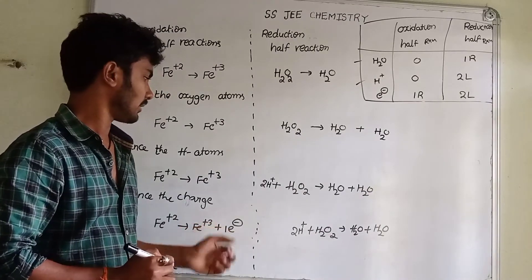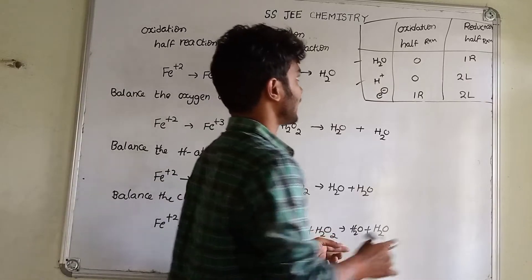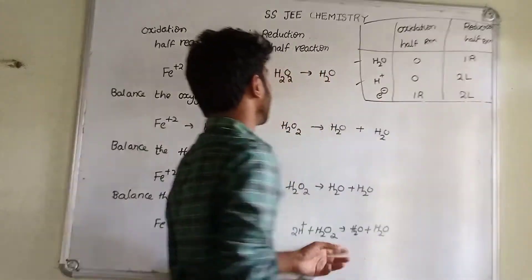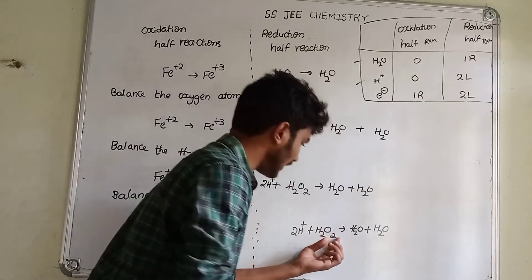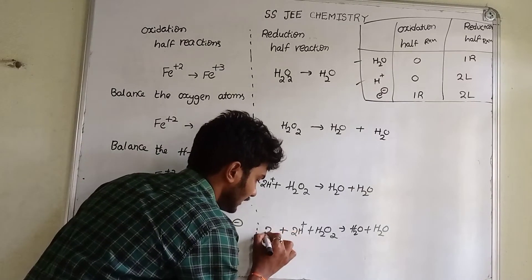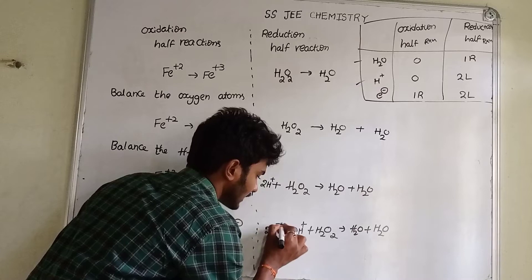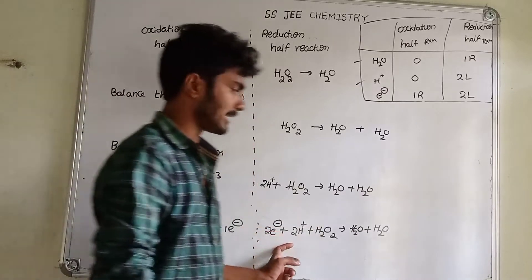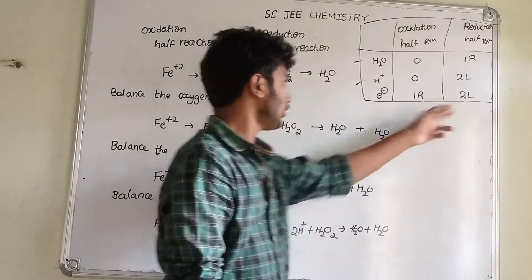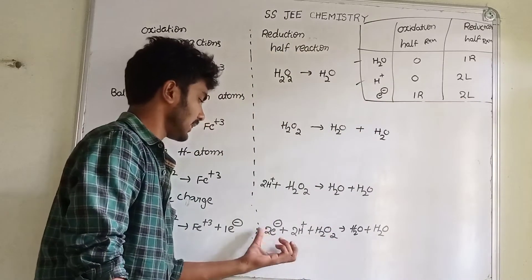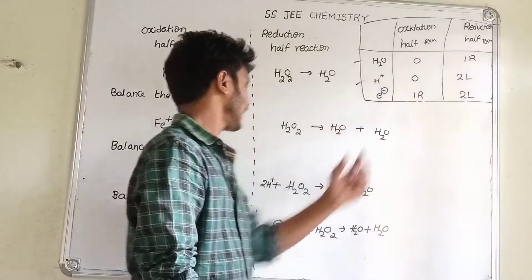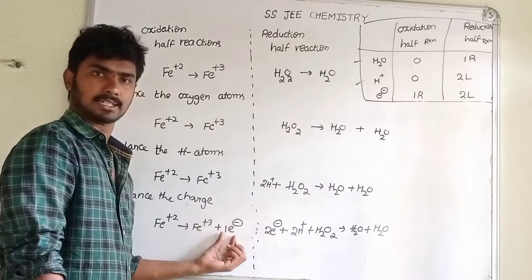Right side: 1 electron added. Now 3 minus 0. In the reduction reaction, left side: 2 electrons added. Left side, 2 electrons added. Right side: 1 electron used.